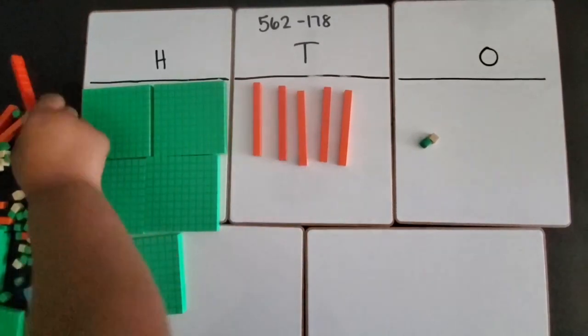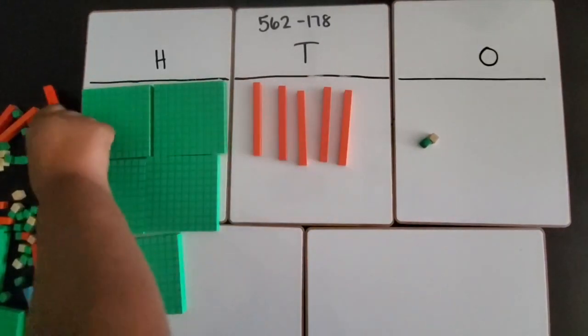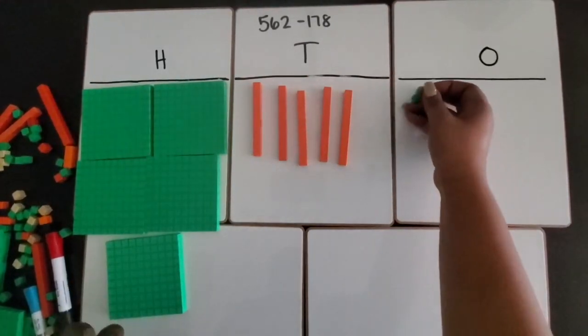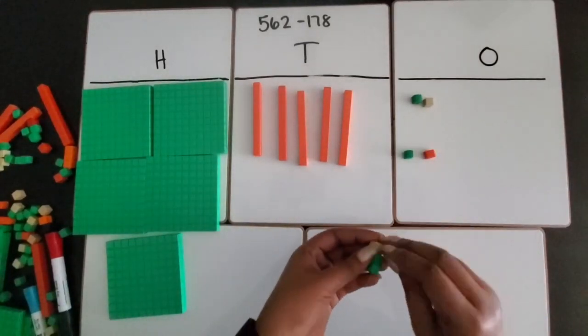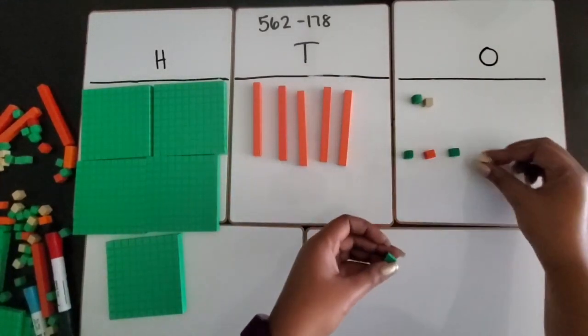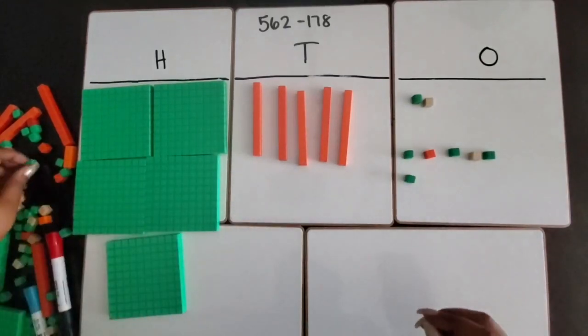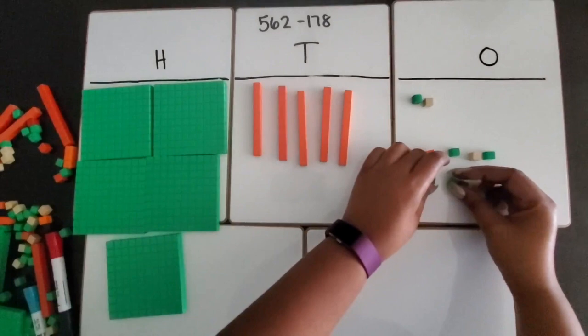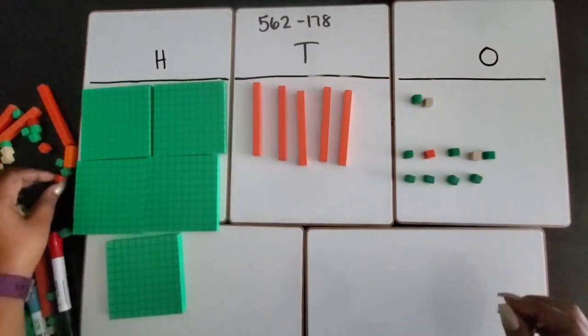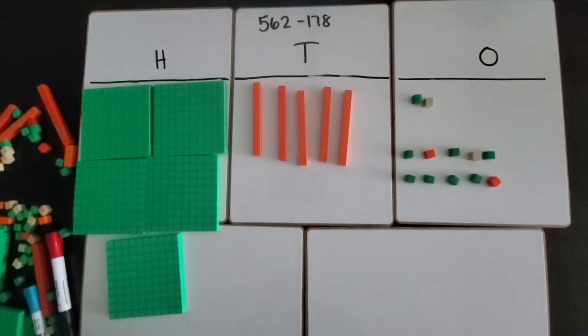There's my two, so I'm going to place down 10 ones to represent the trade I just made with the 10 rod. Now I also want to show what's happening up here.